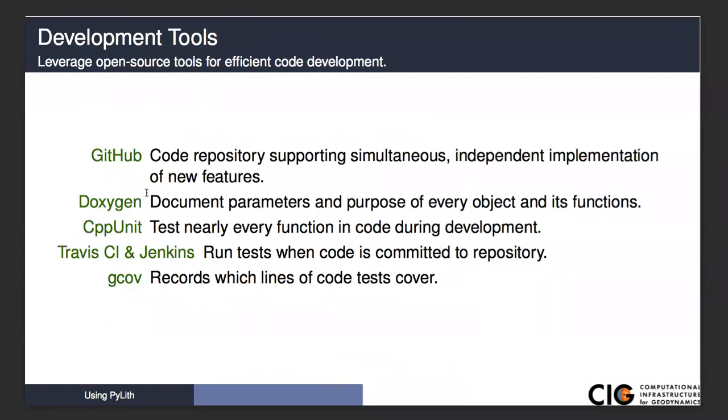Some of the tools we use in development: GitHub, as I've already mentioned. We document within the code using the Doxygen context for documenting all the parameters. Our C++ unit tests use a package called CPPUnit. Anytime we check in code into the repository, a test suite automatically runs on the Travis continuous integration in the cloud that tells us whether our tests that we've developed passed or not. To see how well our tests actually cover the entire range of code, we use additional tools to measure what lines of the code are being tested by the tests and which ones still need tests written for them.